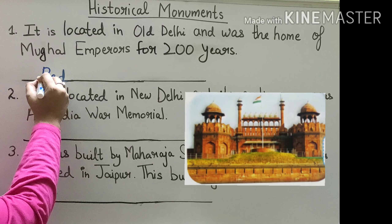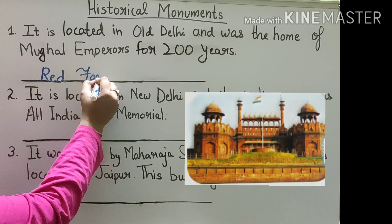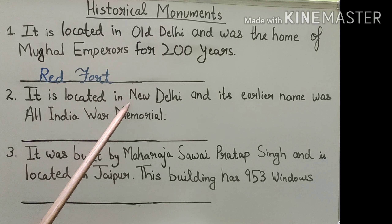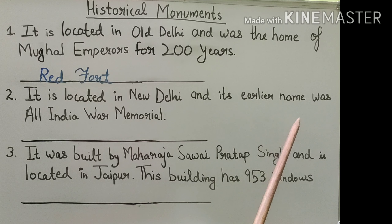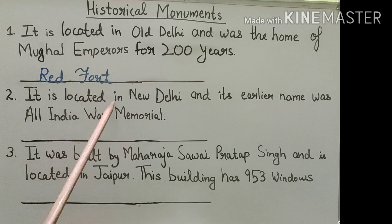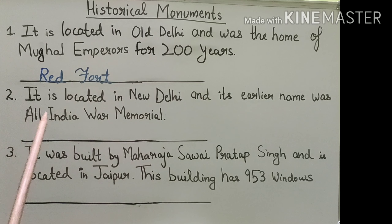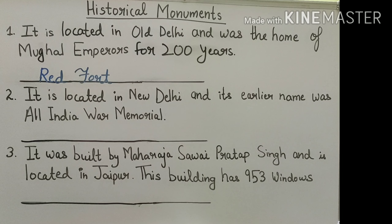Red Fort — R-E-D, Red; F-O-R-T, Fort. Red Fort. Question number two: It is located in New Delhi and its earlier name was All India War Memorial. What is the name of that monument? The answer is India Gate.